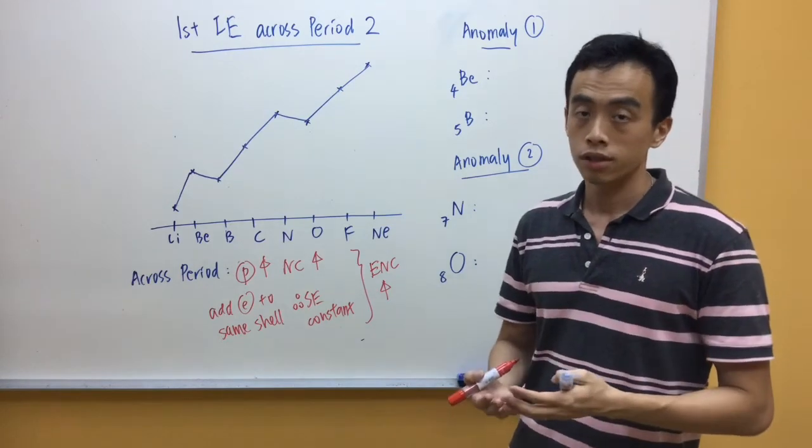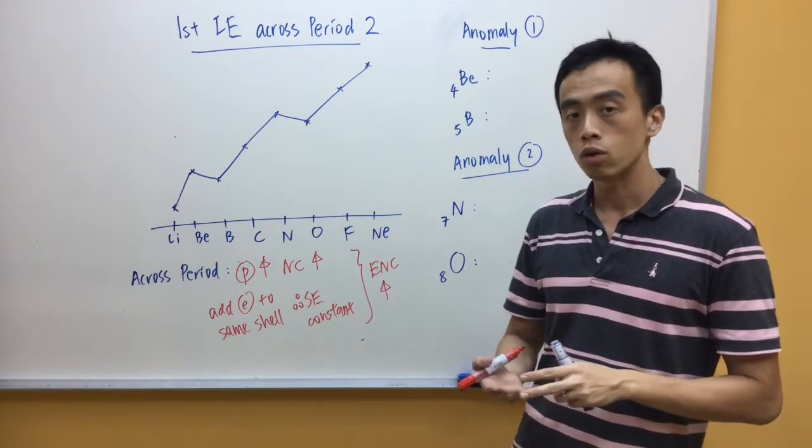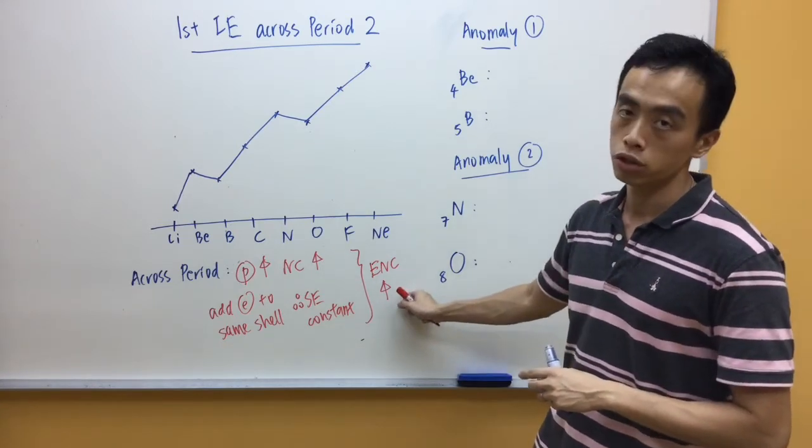Now, of course, what we notice is there are two anomalies, or two discrepancies, which doesn't really obey the effective nuclear charge concept.